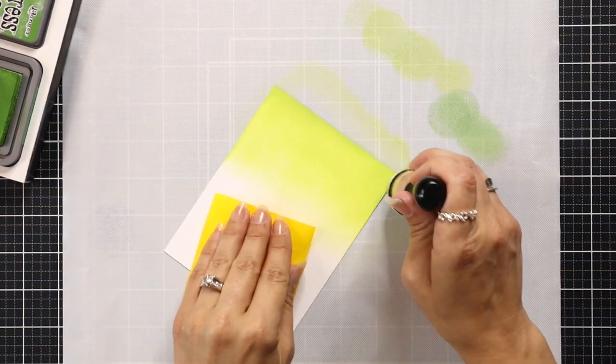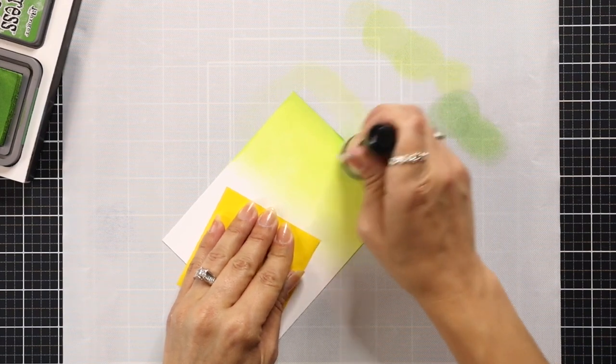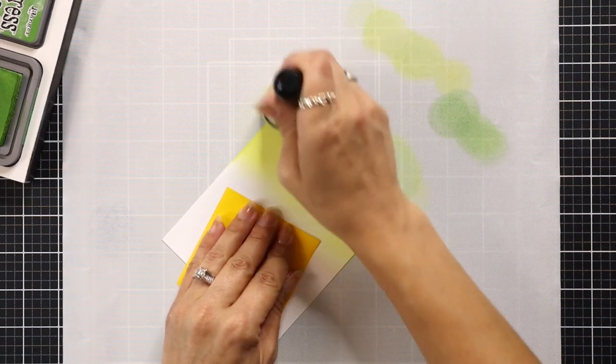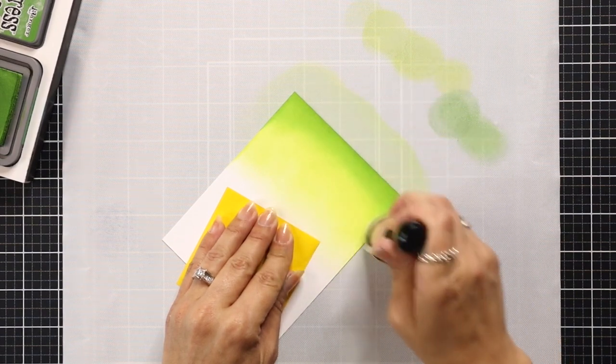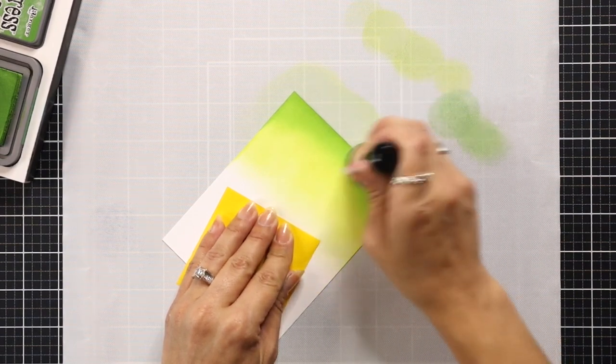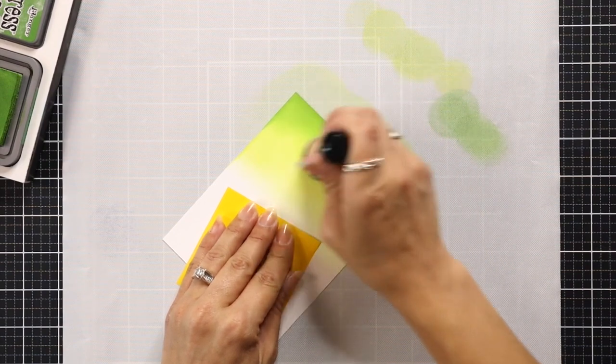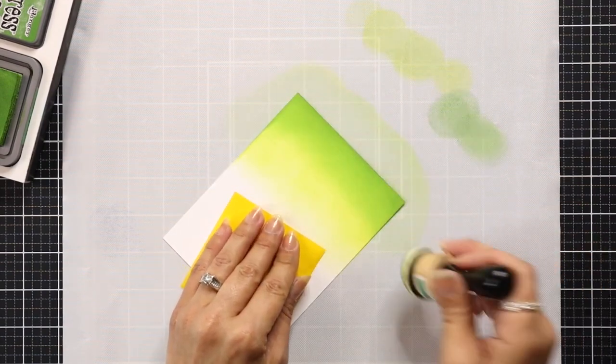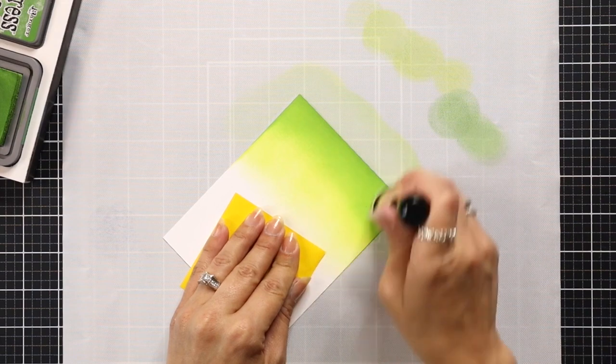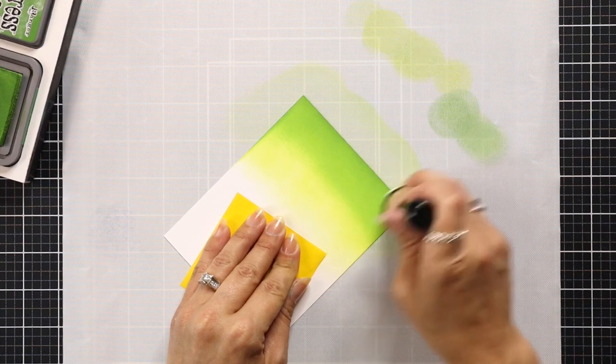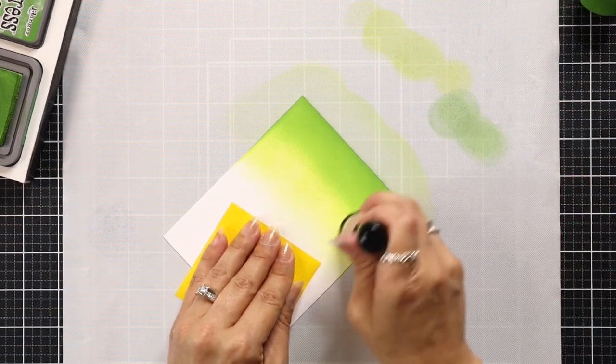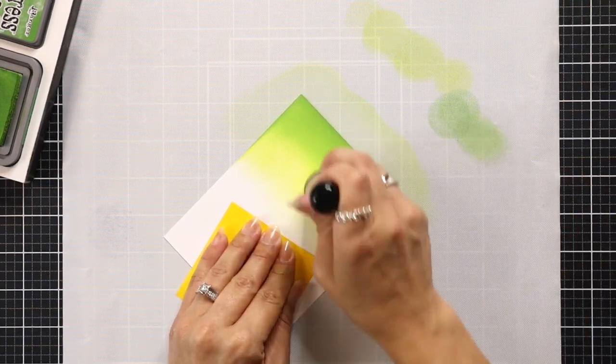Then I'm going to come in with Mowed Lawn and I only want this about part way in. I want to have kind of a gradation of color between that light and dark. I want it to get dark on one end and then fade off into white as it gets towards the middle. So with the Mowed Lawn just coming in really light handed going in circular motions. And if I need to, I can bring in my other blending tool to kind of help smooth that transition a little bit.